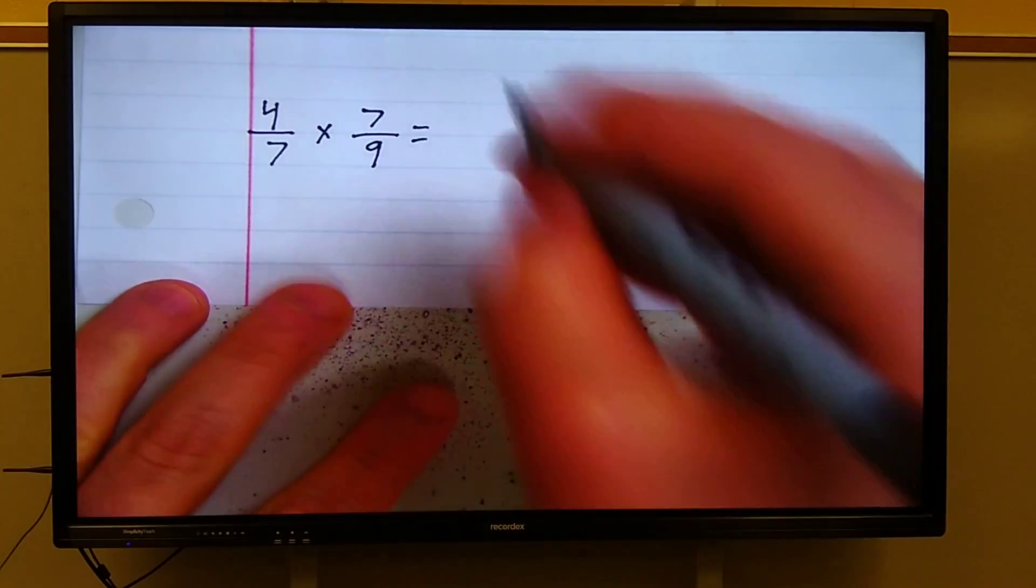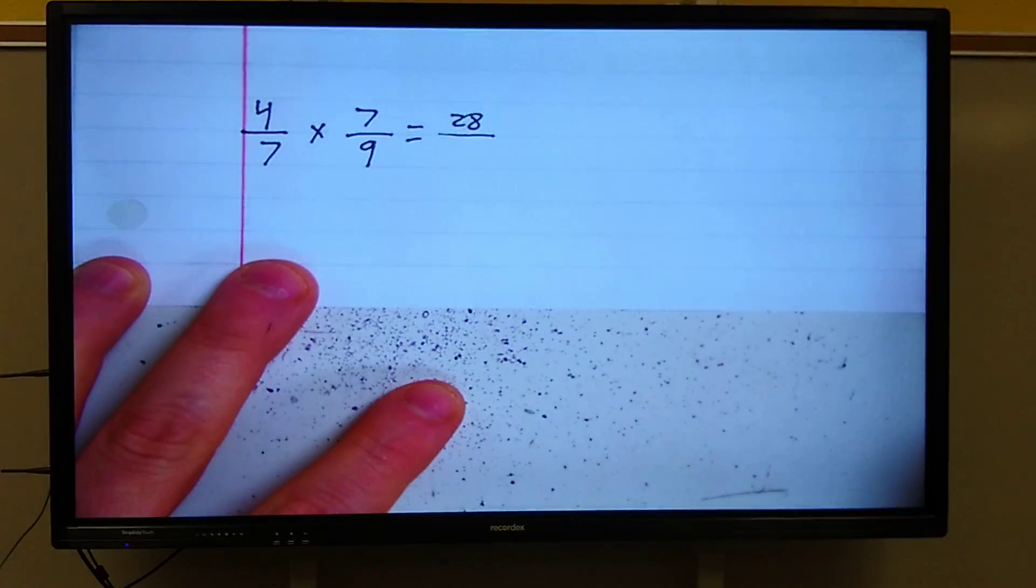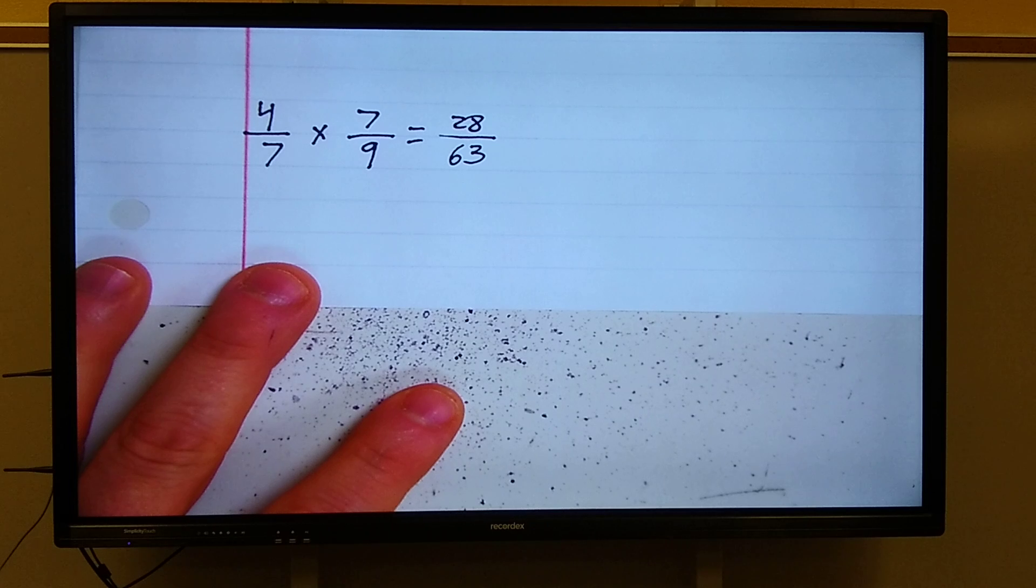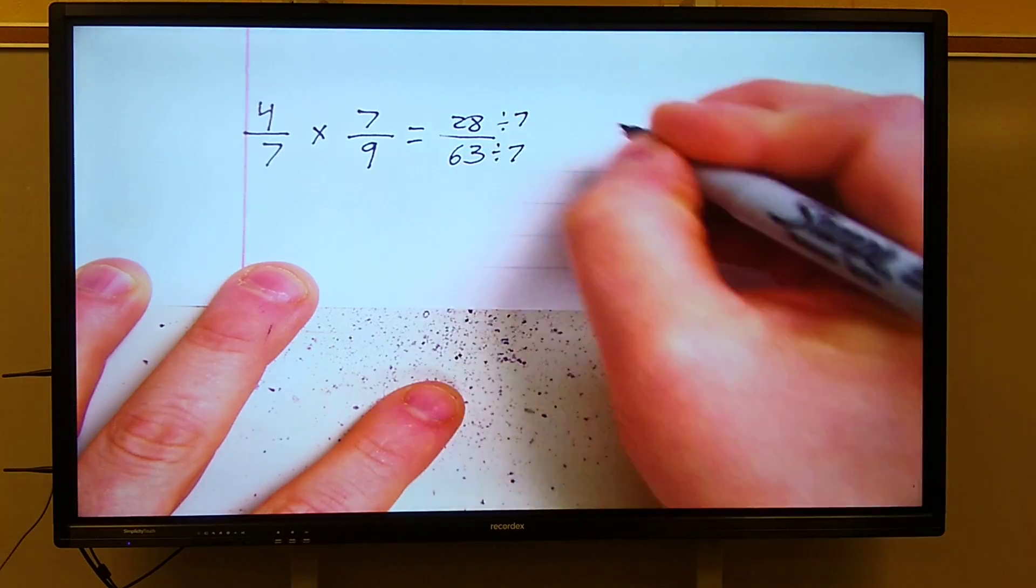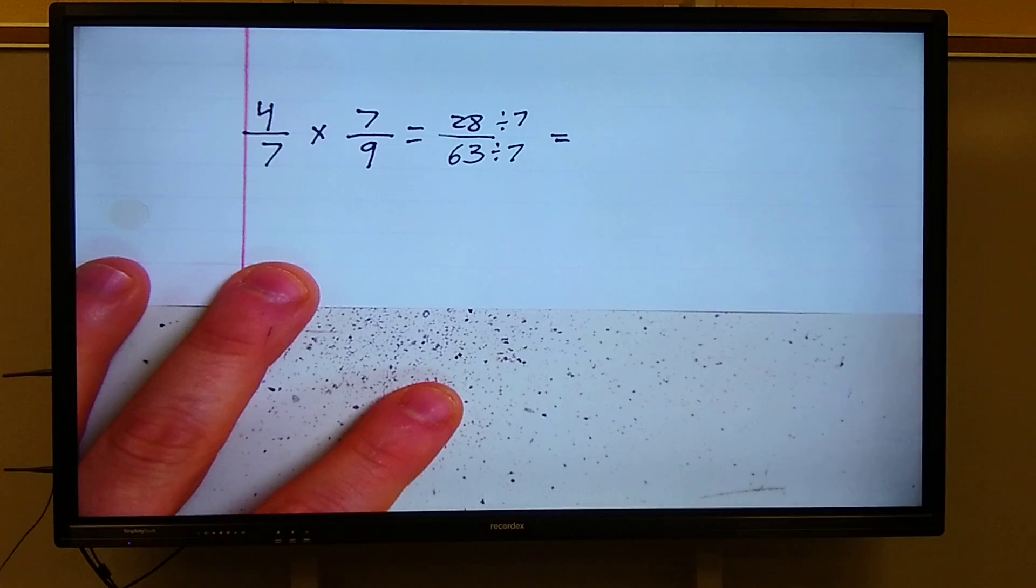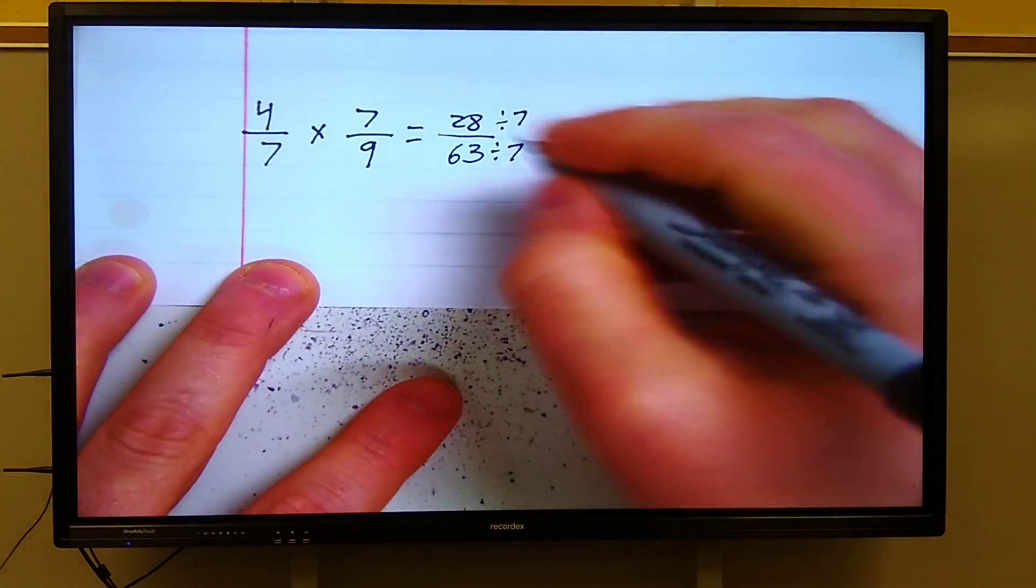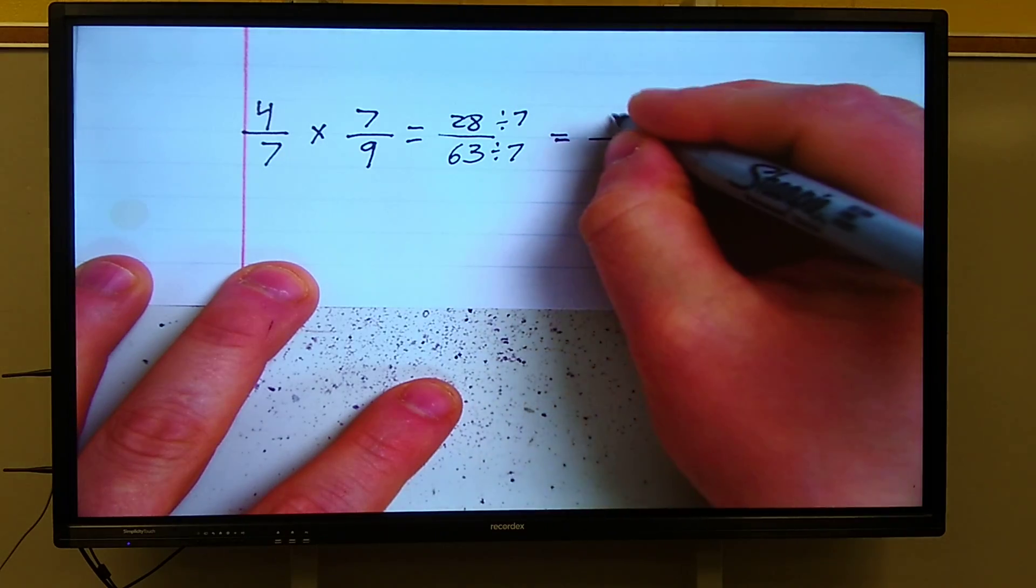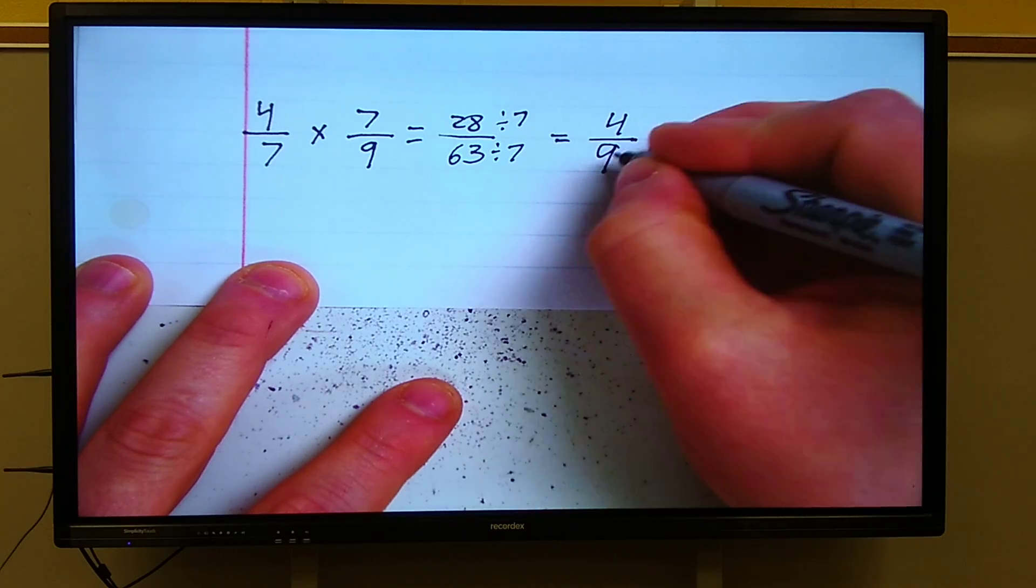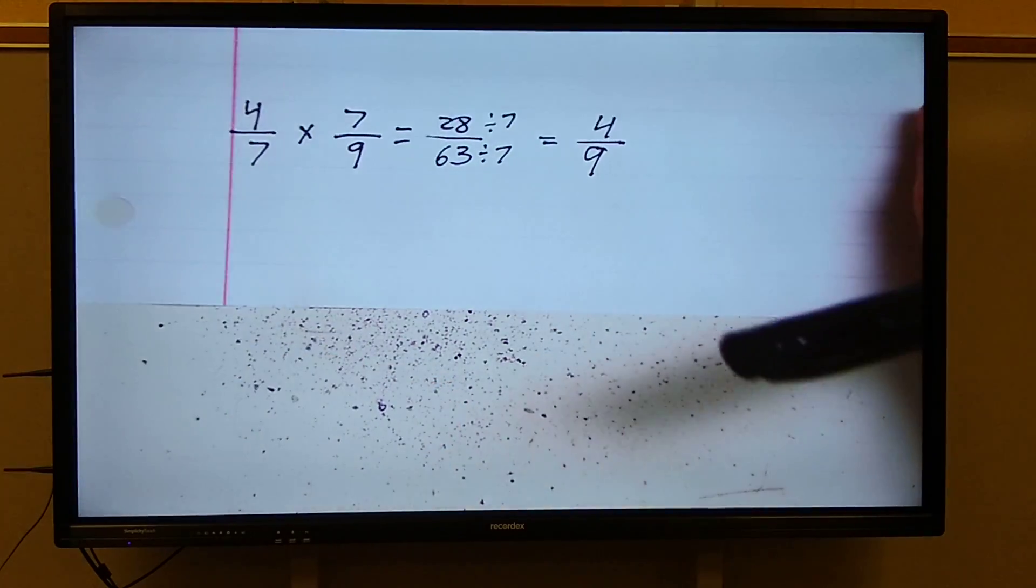Last multiplication practice: 4/7 times 7/9. Pause video, get it right. Alright, let's see how wonderful you did. 4 times 7 is 28. 7 times 9 is 63. Now, is this an improper fraction? No. Is this in simplest form? No. The greatest common factor of 28 and 63 is 7. So if you got 28/63 as your answer, you're wrong. You have to simplify. 28 divided by 7 is 4. 63 divided by 7 is 9. 4/9 is the answer, if you are smart.